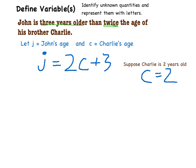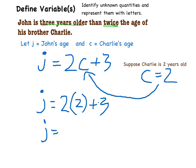If Charlie's age is two, that means c equals two. And I can put that into this equation. Therefore, j is equal to two times two, which is four, plus three, or seven.